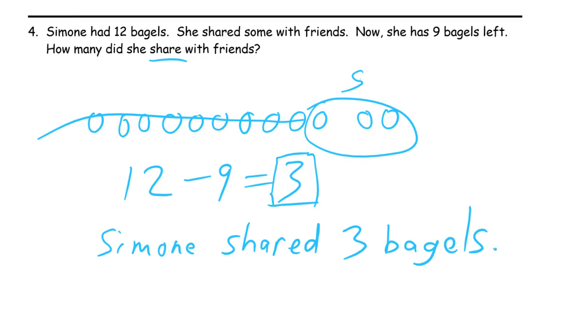You got to label the picture. These are the left bagels there. Now it's labeled. Label picture, number sentence that goes with the story, right? That's what we do. You subtracted 12 minus 9, and then your answer statement. You've got to have all three of those things for every word problem.